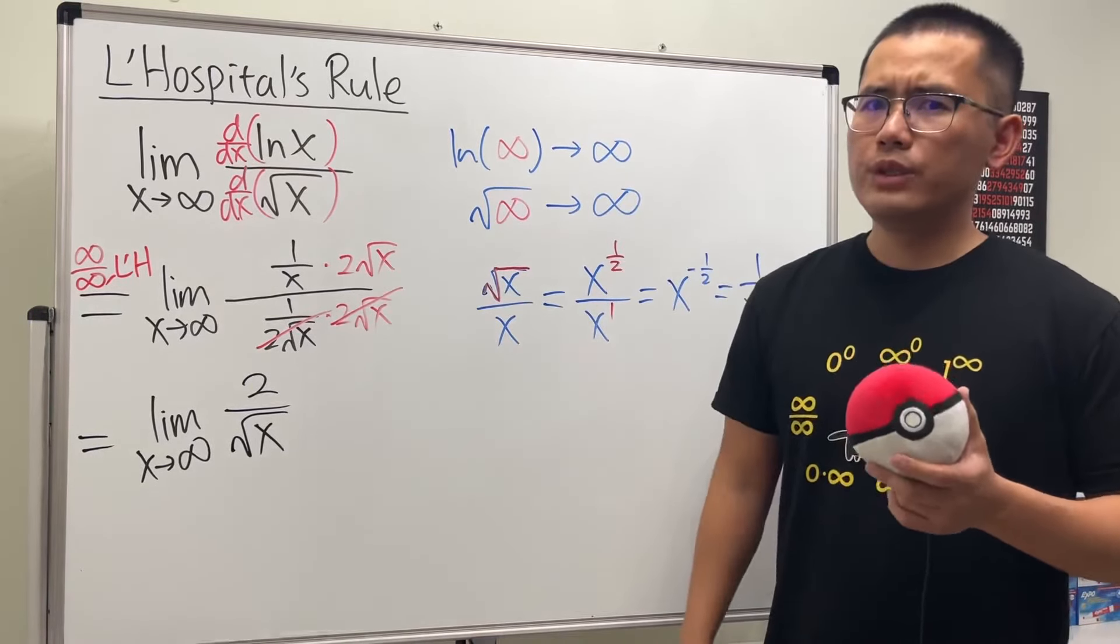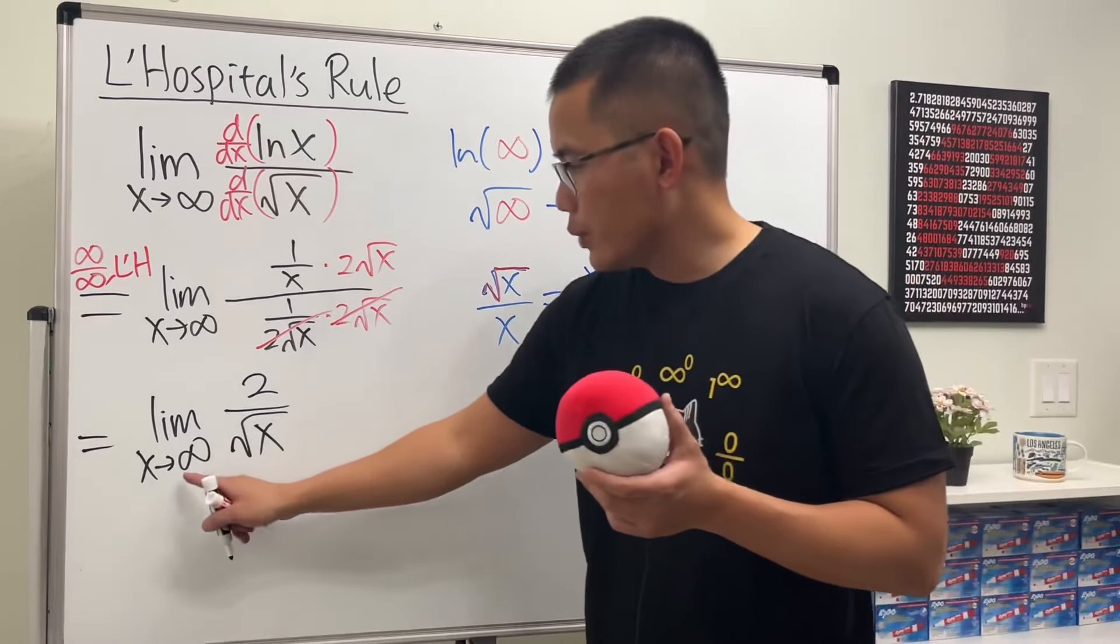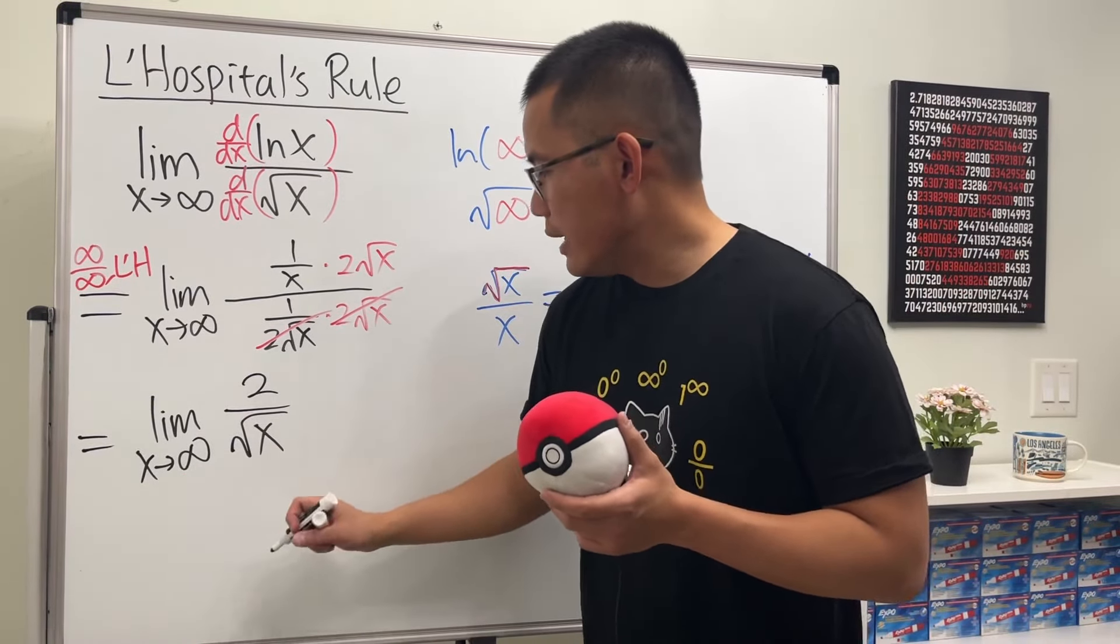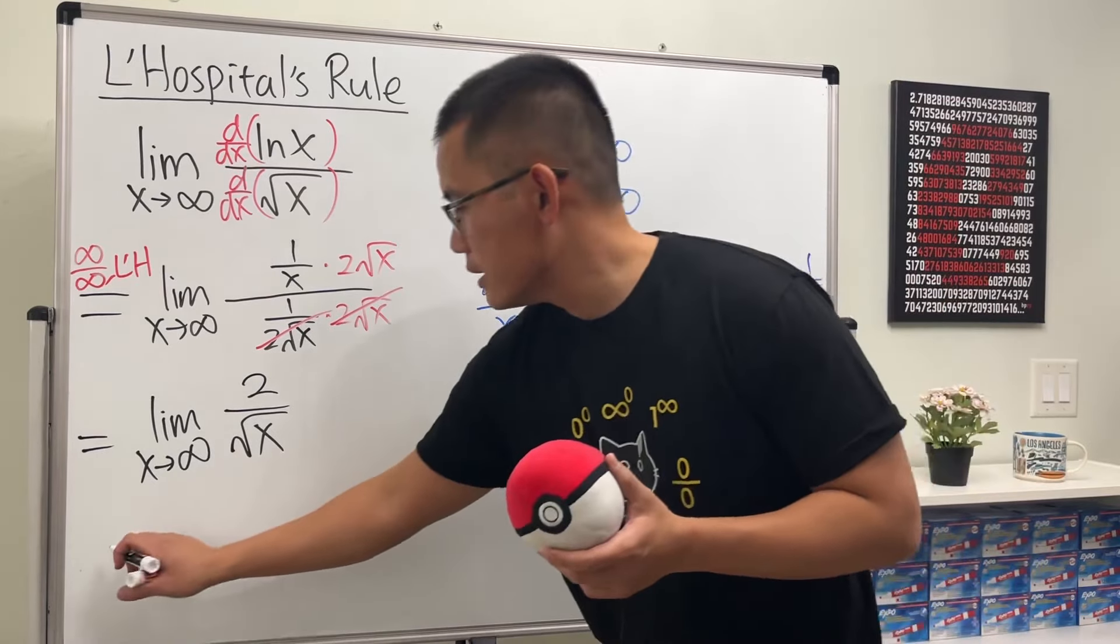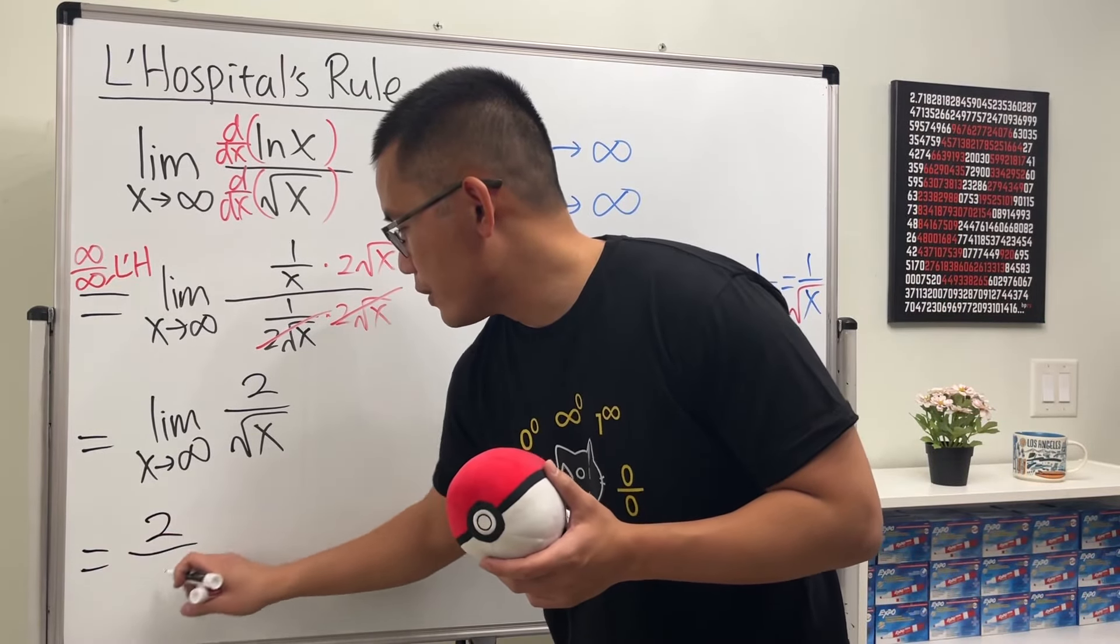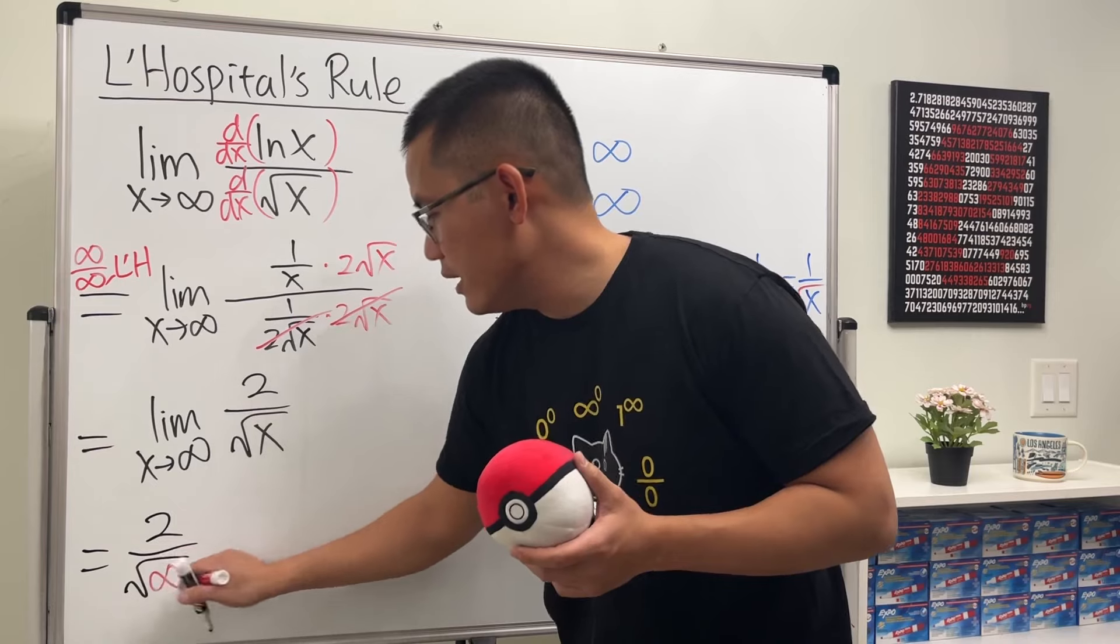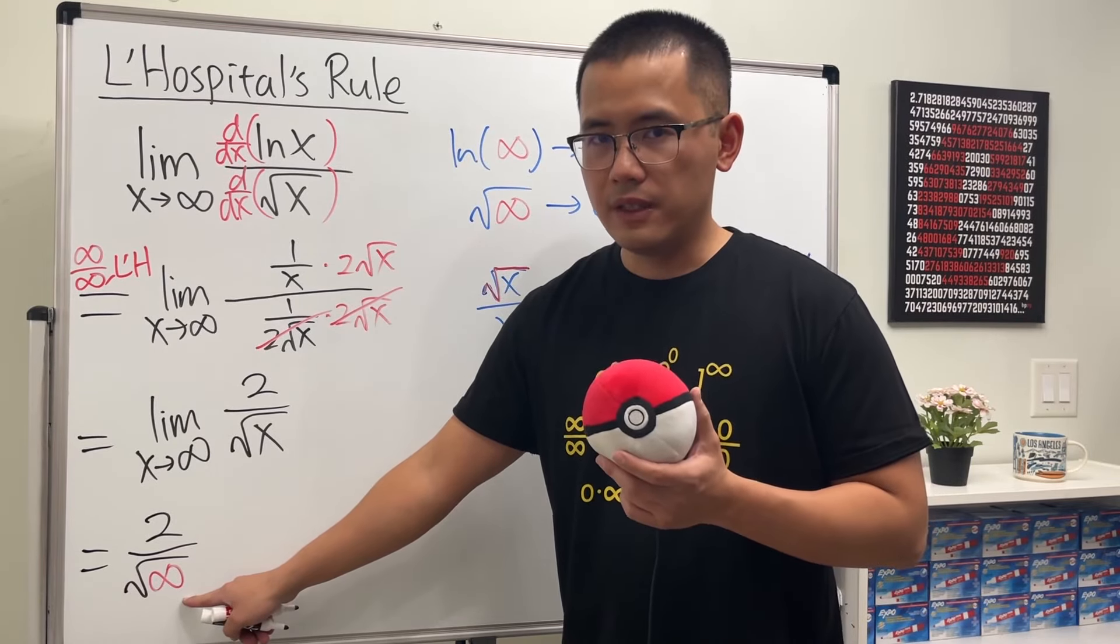And then, right here, do we need to use L'Hospital's rule? No, because we can just put infinity here, and we see this is going to give us 2 over square root of infinity. And square root of infinity is infinity.